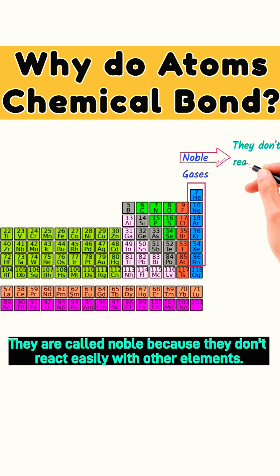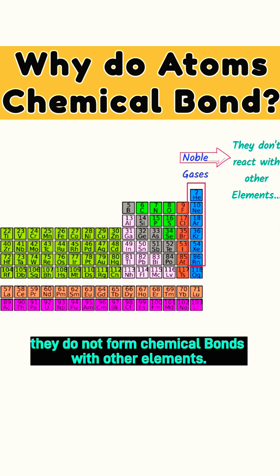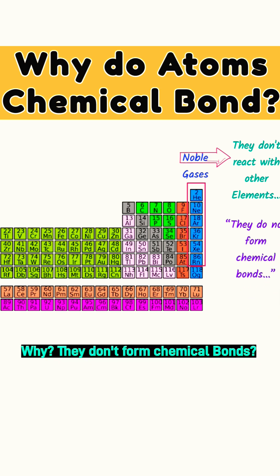They are called noble because they don't react easily with other elements. In simple words, they do not form chemical bonds with other elements. Why don't they form chemical bonds?